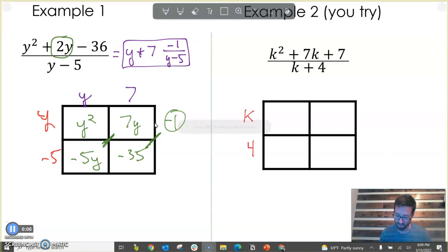I'm going to take my divisor and I'm going to put it over here on the left. You could put it on top. This process will work the exact same way. And I'm going to take that quadratic term of k squared and place it in that top left box. k squared divided by k is k. K times 4 is 4k.